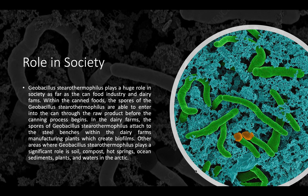Geobacillus stearothermophilus has a huge role in the world that we know today. It's found as a spore on raw produce, which is further found in canned goods of that produce. It is also found in dairy farms on top of their steel benches as biofilms. Other areas where it plays a significant role include soil, compost, hot springs, ocean sediments, plants, and waters in the Arctic.